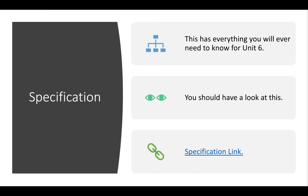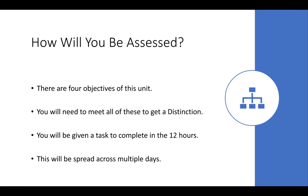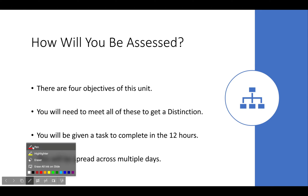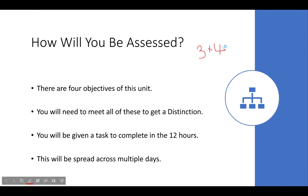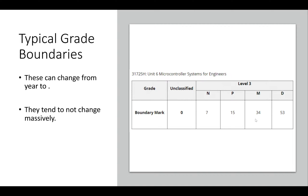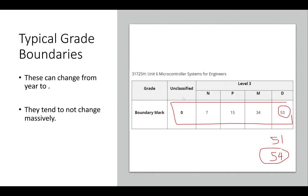There are four objectives in this unit; you'll need to meet all of them to get a distinction. You'll be given a task to complete in 12 hours, spread across multiple days — for example, three hours per day over four days. Grade boundaries can shift slightly: a distinction is approximately 53 out of 80, a merit is 34 out of 80, a pass is 15 out of 80, a near pass is 7 out of 80, and 0 is unclassified. These are rough guidelines set by the exam board.